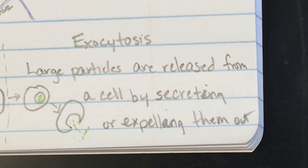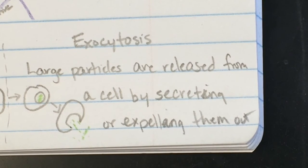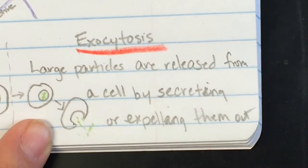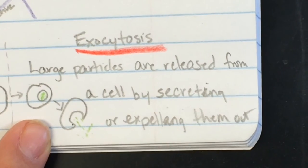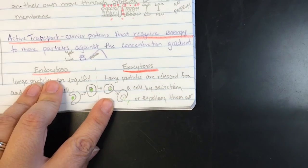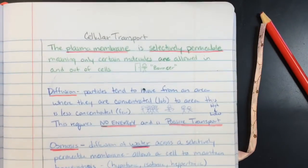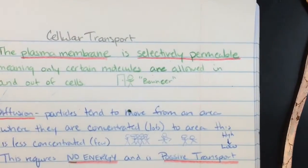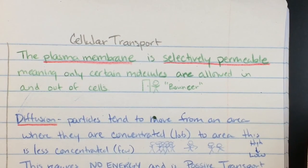So large particles are released from a cell by secreting or expelling them out like if you get expelled by school we kicked you out but we don't want to do that because we want you to be successful and graduate and become rich and famous and send some money back to us. Alright so exocytosis is that key vocab term there and I know that was a lot of notes if you ran out of paper just do it on a sheet at the bottom and tab it out. Some of you have asked for this so I'm going to do a slow dramatic zoom.